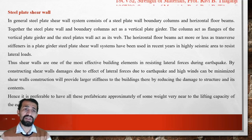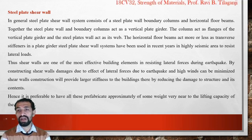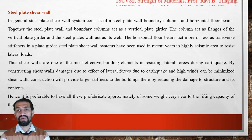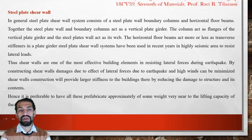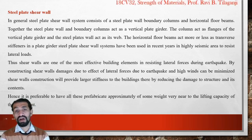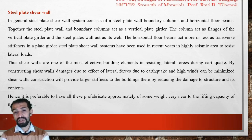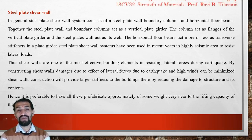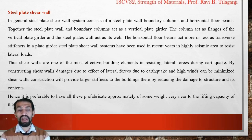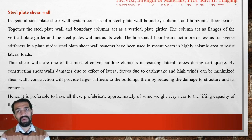Steel plate shear walls use boundary columns and horizontal floors together with a steel wall, acting as a vertical plate girder. Shear walls are one of the most effective building elements for resisting forces during earthquakes. By constructing shear walls, damages due to lateral forces, high winds, and high earthquakes can be minimized — lateral resistance is significantly increased.